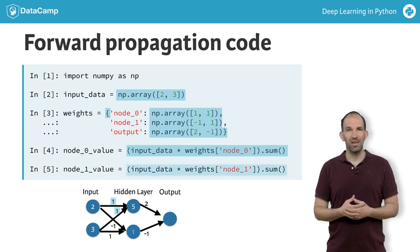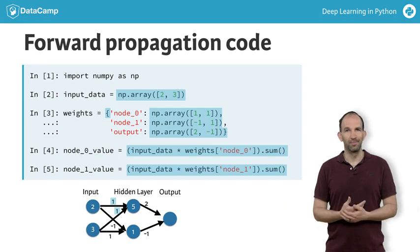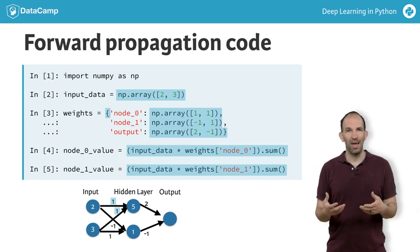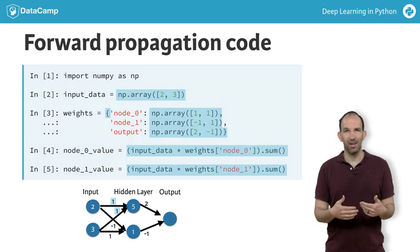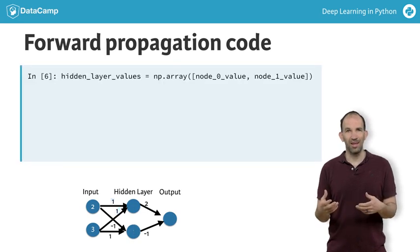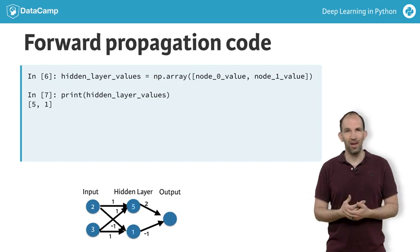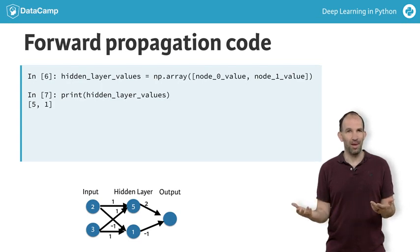We then do the same thing for the bottom node of the hidden layer, which is called node 1. Now both node 0 and node 1 have numeric values. To simplify multiplication, we put those in an array here. If we print out the array, we confirm that those are the values from the hidden layer you saw a moment ago. It can also be instructive to verify this with pen and paper.